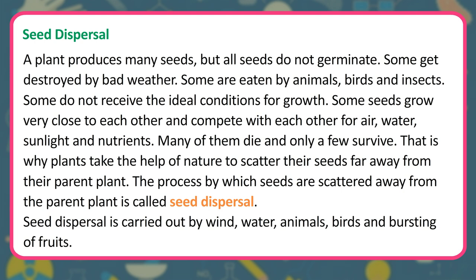Seed Dispersal: A plant produces many seeds, but all seeds do not germinate. Some get destroyed by bad weather, some are eaten by animals, birds and insects, and some do not receive ideal conditions for growth. Some seeds grow very close to each other and compete for air, water, sunlight and nutrients — many die and only a few survive. That is why plants take the help of nature to scatter their seeds far away from their parent plant. The process by which seeds are scattered away from the parent plant is called seed dispersal, and it is carried out by wind, water, animals, birds and bursting of fruits.